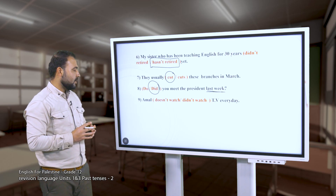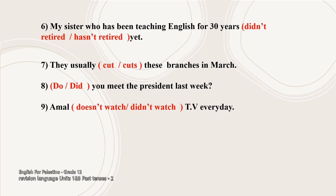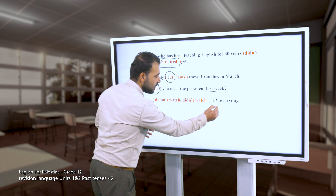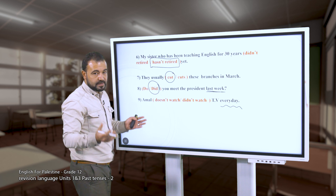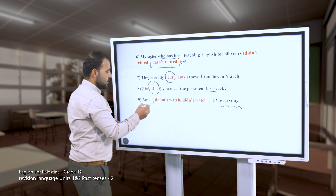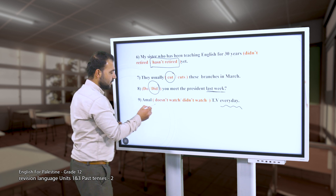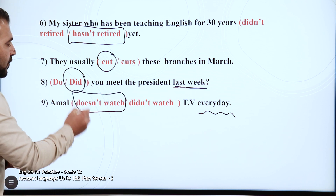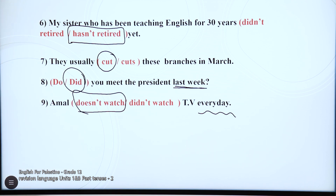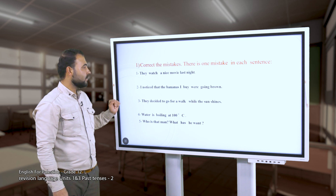Sentence nine: 'Ml doesn't watch TV every day.' 'Every day' means routine, which means present simple tense - so the correct answer is 'doesn't watch.' Sentence ten ends the activity.